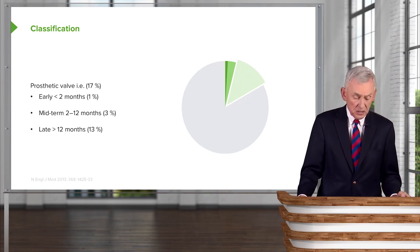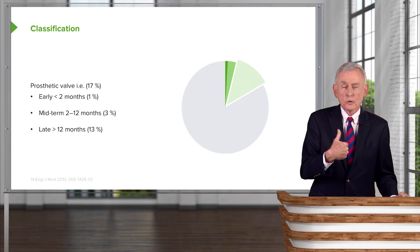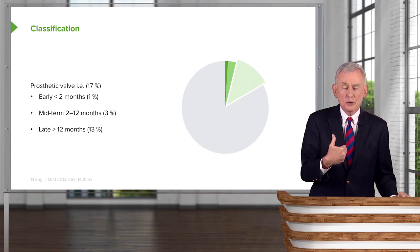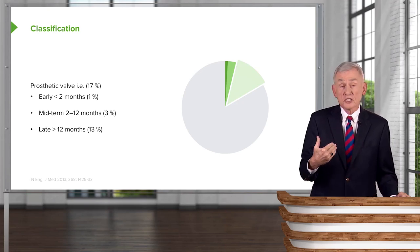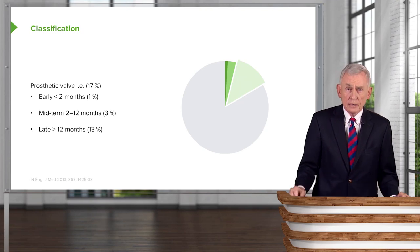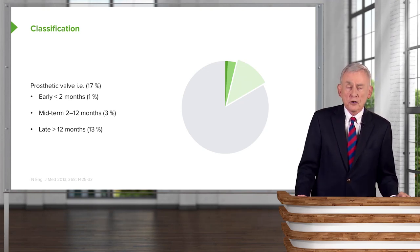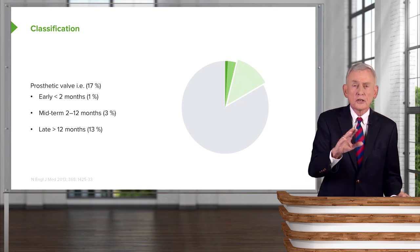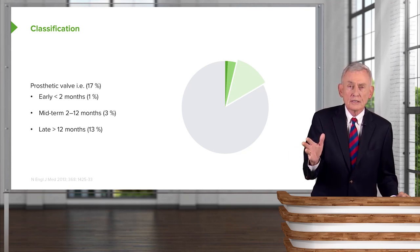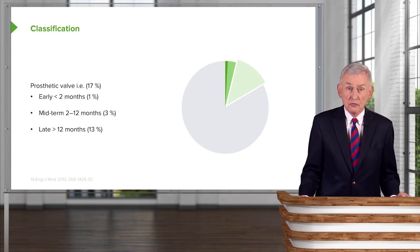Why classify prosthetic valve endocarditis as early, midterm, and late? If someone develops infection on a prosthetic heart valve shortly after surgery, it's very likely due to organisms that were in the hospital at the time of surgery, before the wound healed, or from skin bugs that fell into the open or healing wound. Midterm still includes some of those organisms, but others begin to creep in. Late prosthetic valve endocarditis — more than 12 months — means the endothelium has covered the valve, giving it a new surface, so late prosthetic valve endocarditis acts a lot more like native valve endocarditis.